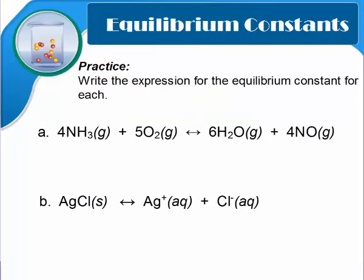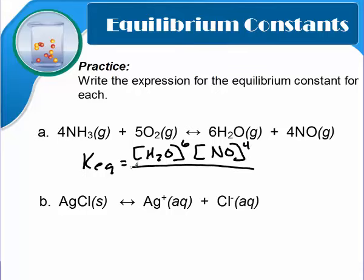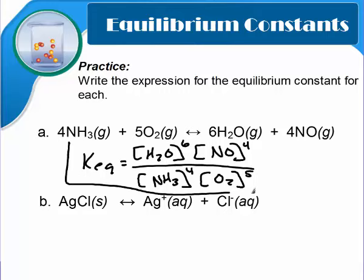Let's see how to write some equilibrium expressions for things other than A's and B's. We'd write Keq is equal to our products, our first one is H2O raised to the power of 6, NO raised to the power of 4, over NH3 to the power of 4 and oxygen to the power of 5. That's our Keq expression.